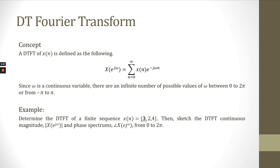In this example, we need to determine the DTFT of a finite sequence Xn: {3, 2, 4}, where the bold and underlined value is for n equal to 0, n equal to 1, and n equal to 2. Then, we sketch the DTFT continuous magnitude. This includes the label for magnitude and phase spectrums, with the phase range from 0 to 2π, and the range for omega.